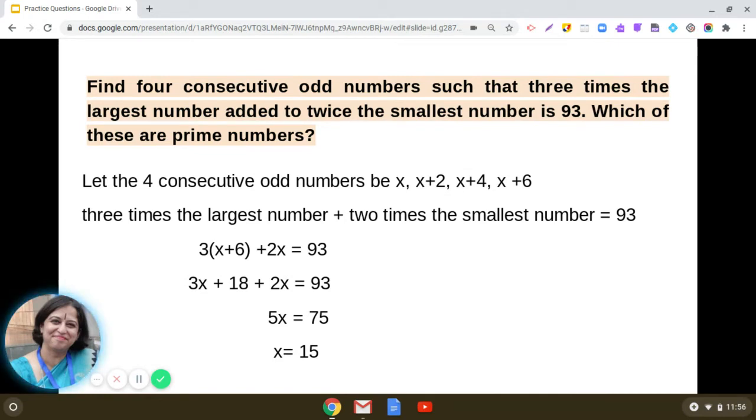In this question it is given that three times the largest number, that is 3 into x plus 6, plus 2 times the smallest number, that is 2x, equals 93. This will help us in framing the linear equation in one variable. So we get 3 into x plus 6 plus 2x equals 93.